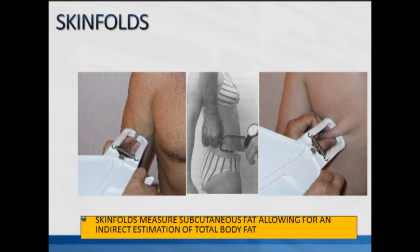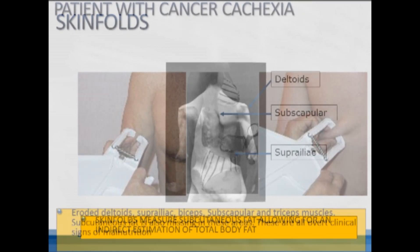When we talk about skinfolds, we're really talking about measurements of subcutaneous fat that allow for an indirect estimation of total body fat. We have three examples: the bicep on the left, the suprailiac in the middle, and the subscapular on the far right. In all three cases we're looking at a fat pinch, which allows the physician, nutritionist, or dietitian to make an overall estimation of total body fat content using specific equations.